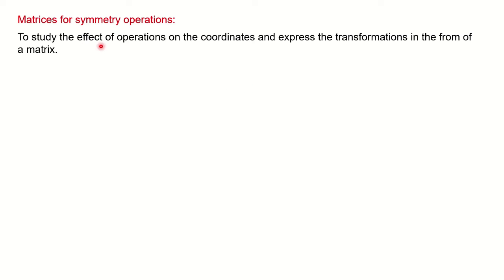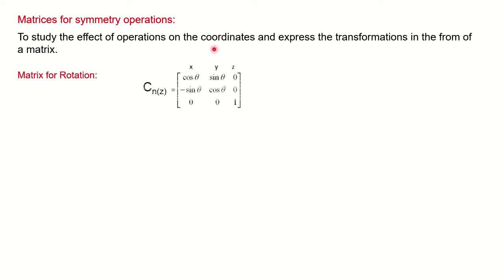Now we will see the matrices for the symmetry operations. Why do we need them? To see the effect of all symmetry operations on coordinates X, Y, Z, and to express this transformation in the form of a matrix. For rotation, in general, we represent it by CN with respect to the Z axis. The matrix for CNZ symmetry operation with respect to XYZ coordinates is the standard rotation matrix.